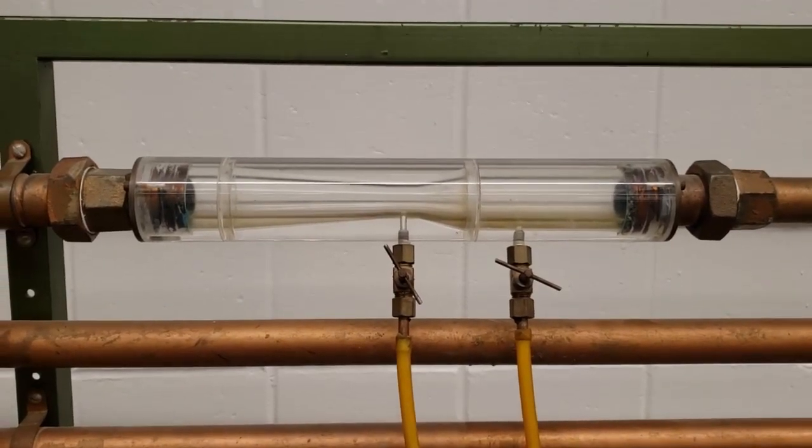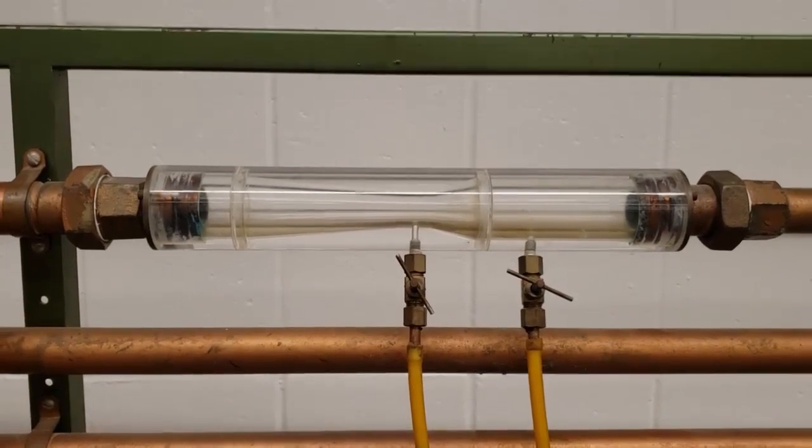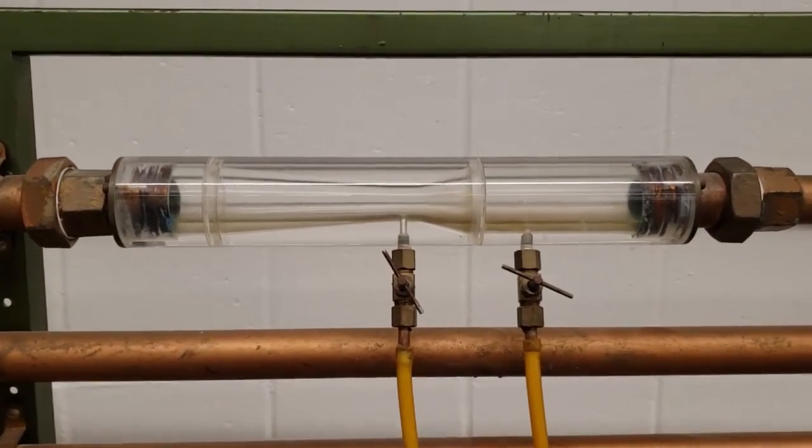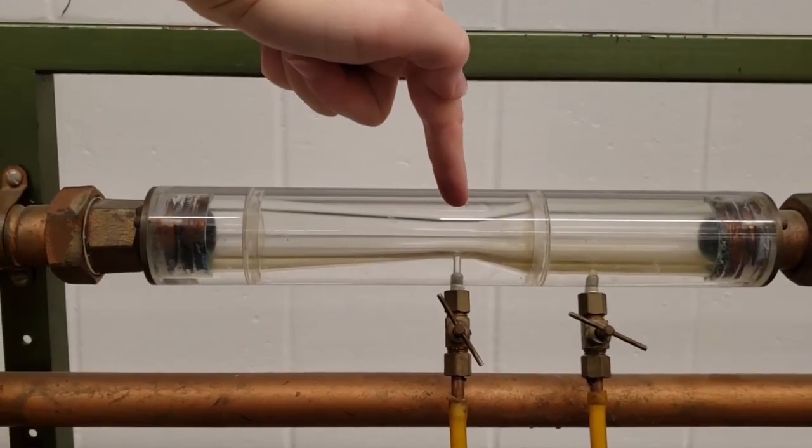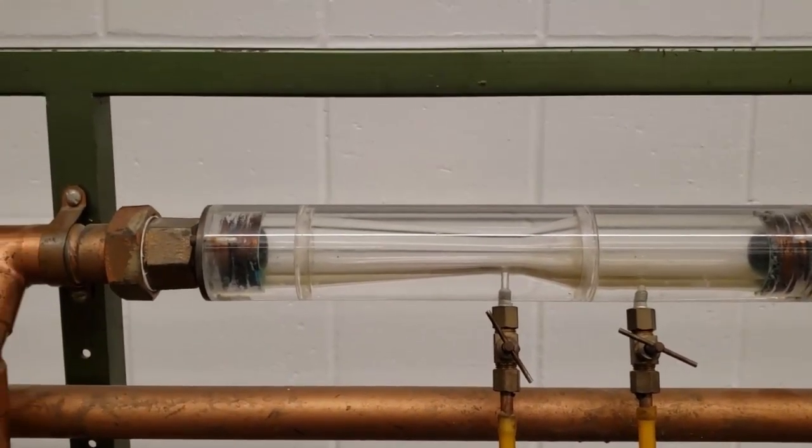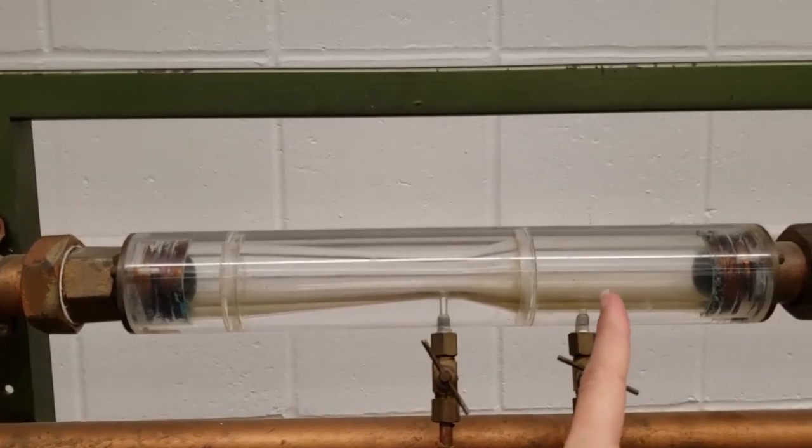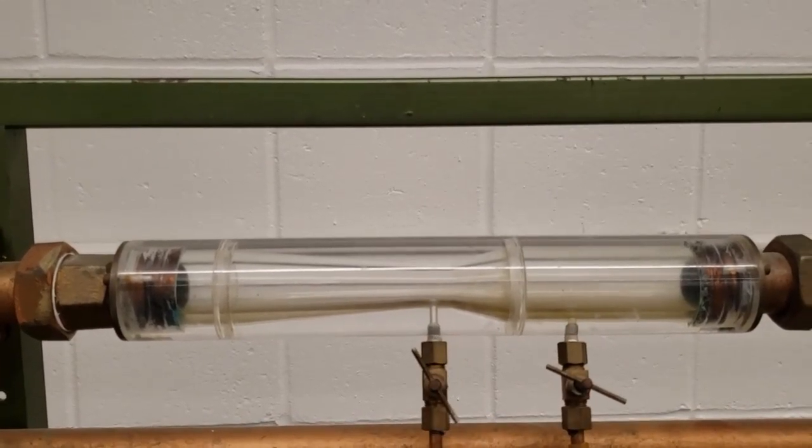This is experiment number two, calibration of a venturi, where you have flow that goes from a constant pipe diameter, suddenly contracted, and then has a gradual expansion. And from here you measure the head loss difference between point one and point two.